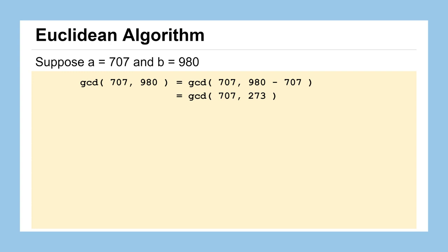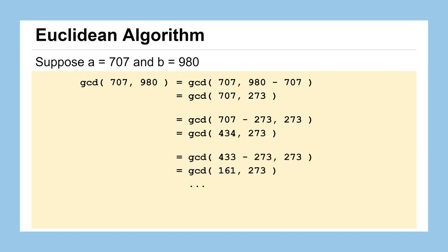But why stop there? If that rule holds, we should do the same trick again. Subtract 273 from 707 and find the greatest common divisor of 434 and 273 — even smaller numbers. We keep going back and forth, subtracting the smaller number from the larger, until eventually the two numbers are the same. For example, the greatest common divisor of 7 and 7 is 7.